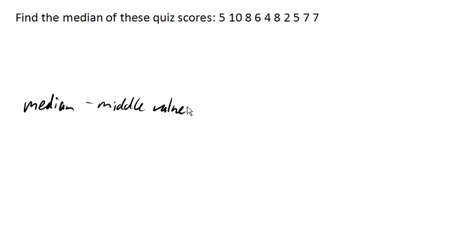So the median is the middle value from a set of data. Sorry, middle value in order. So if we list our data in order, the median will be the middle value. So if my data was 1, 3, 7, 10, 15, the middle value would be 7. 7 would be the median of that data.